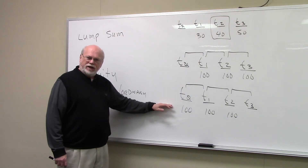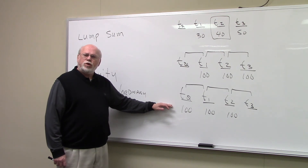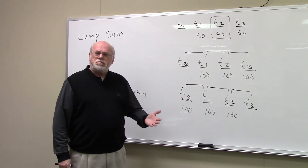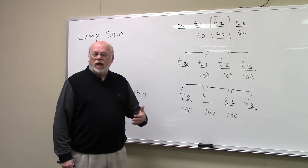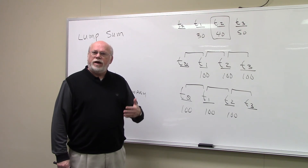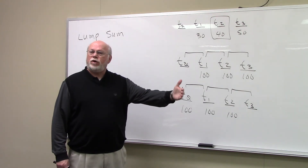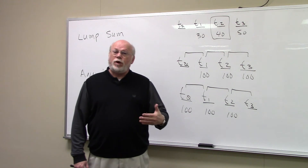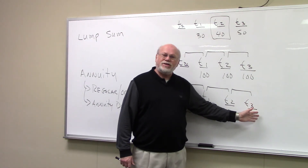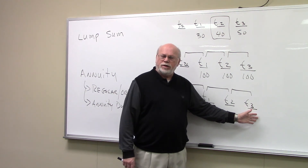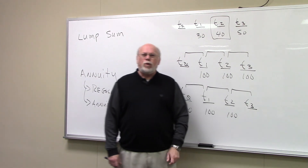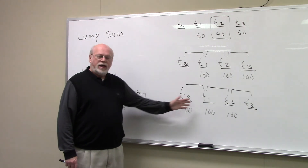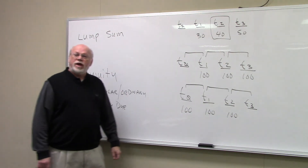An example of an annuity due would be a lease. If you were going to rent an apartment and you told the landlord you'd take it, the landlord would say the rent starts right now. If you sign a 12-month lease, your payments are due at the beginning of every month for 12 months. When you make that last payment in the 12th month, you'll make that payment on December 1st — that's your 12th payment — but you get to stay until the end of the month, December 31st. These are annuity dues: payment at the beginning of every time period.